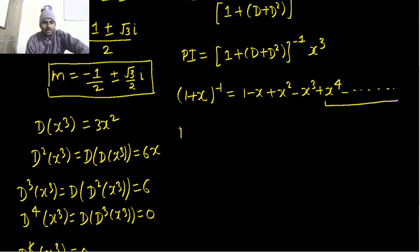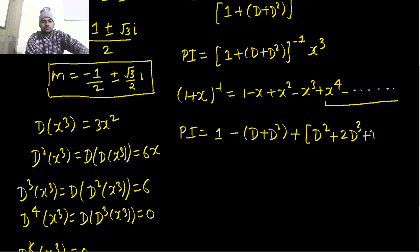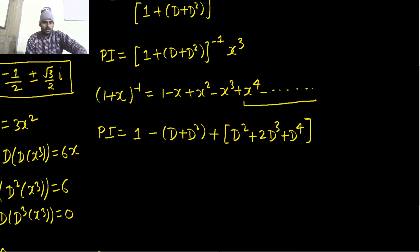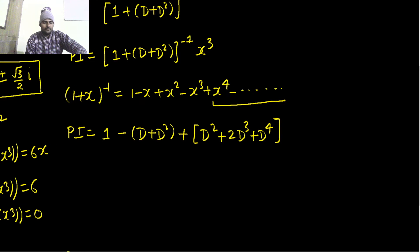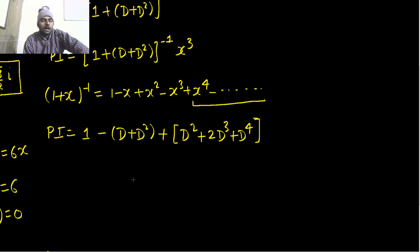So my particular integral will be, this expansion will be 1 minus (D + D²) plus (D + D²)² minus (D + D²)³.